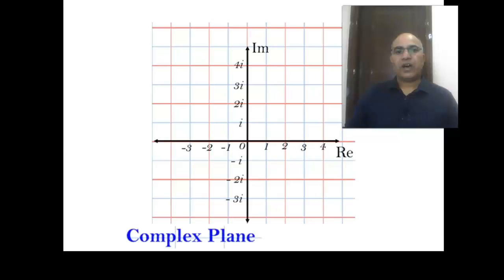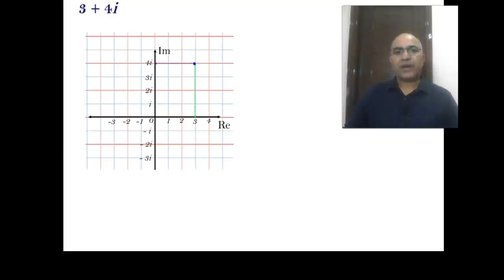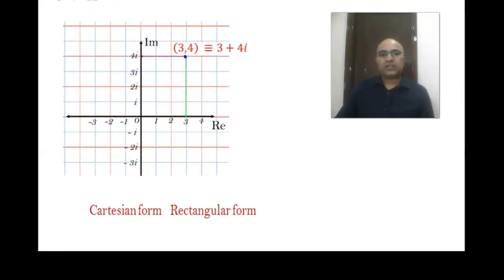There are two ways to represent a complex number in a plane, which is also called the Argand plane. The first is the standard method in which we represent it by a point — for example, 3 plus 4 iota is represented by the point (3, 4). This form is called Cartesian form or rectangular form.